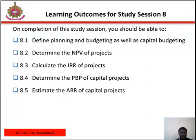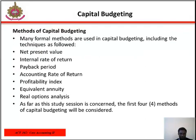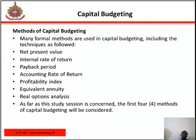You should also be able to estimate the accounting rate of return of a capital project. Capital budgeting, which can also be called investment appraisal, is the planning process used to determine which of an organization's long-term investments — such as new machinery, replacement machinery, new plant, new products, and research and development projects — are worth pursuing. It is also a budget for capital investment expenditure.